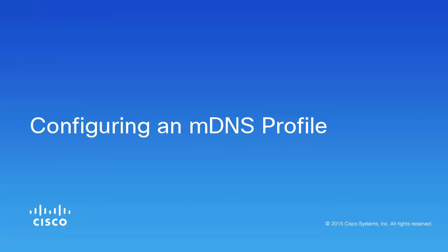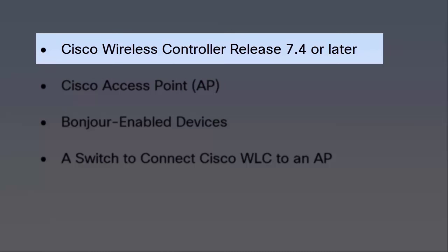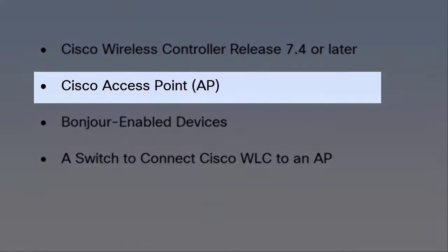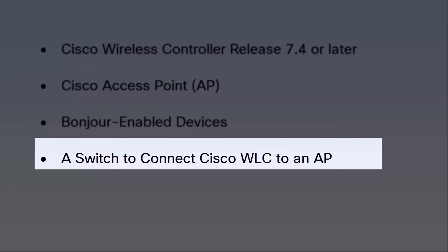This video explains how to configure an MDNS profile on Cisco WLC. For more information about the components required, the limitations that exist, and the prerequisites, refer to the video titled before you begin. To configure MDNS, the following components are required: Cisco wireless controller release 7.4 or later, Cisco access point or AP, Bonjour enabled devices, and a switch to connect Cisco WLC to an AP.